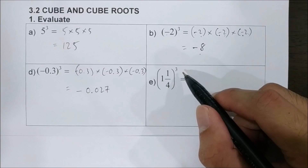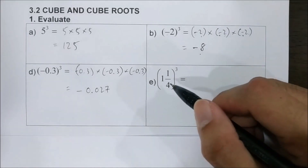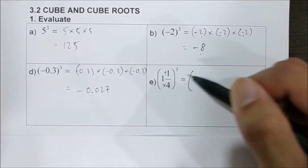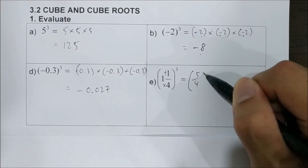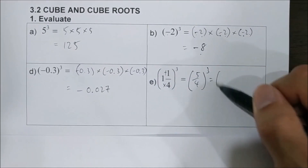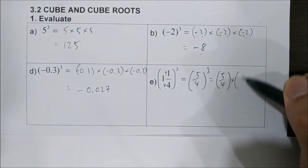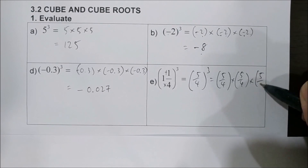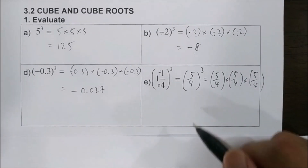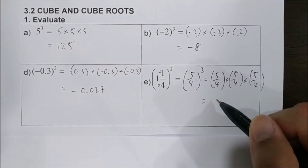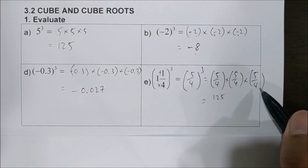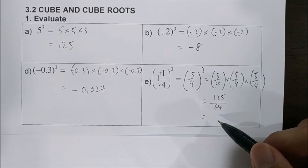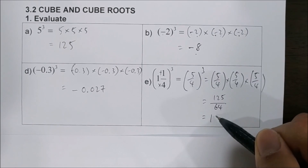For 1 and 1 over 4 cubed, it is easier if we change the mixed number to an improper fraction: 4 times 1 plus 1 gives 5 over 4 cubed, which means 5 over 4 times 5 over 4 times 5 over 4. So 5 times 5 times 5 is 125, and 4 times 4 times 4 is 64, giving 125 over 64. We can write this in mixed number form as 1 and 61 over 64.